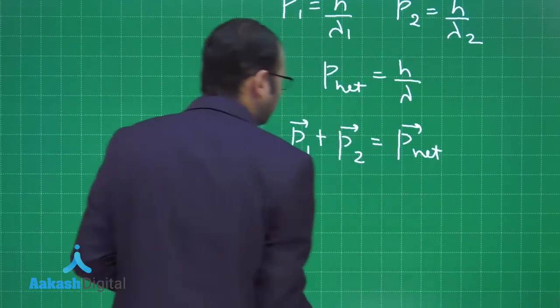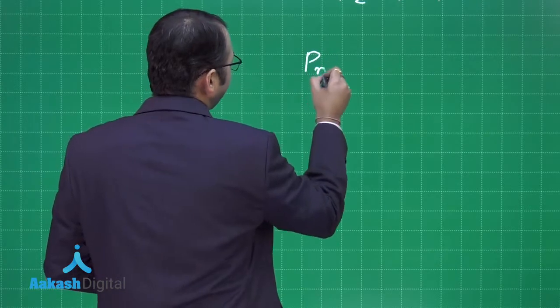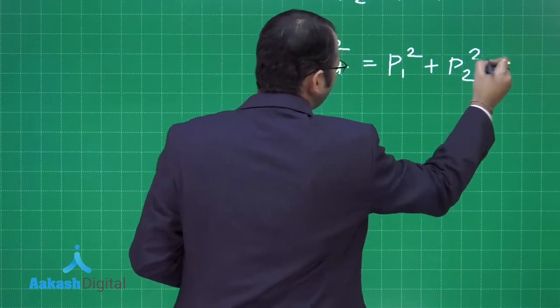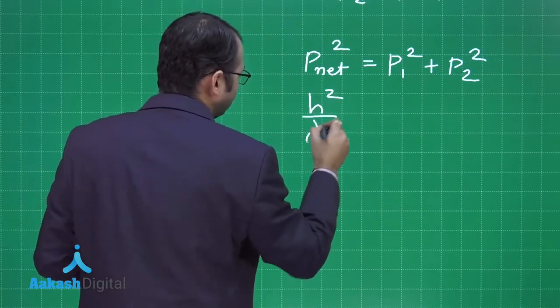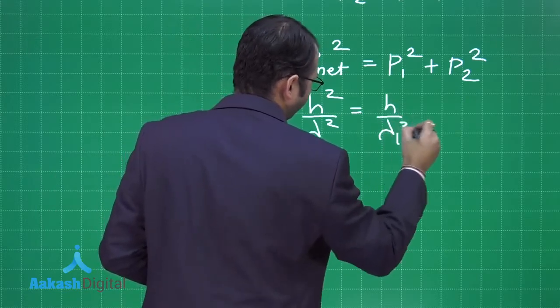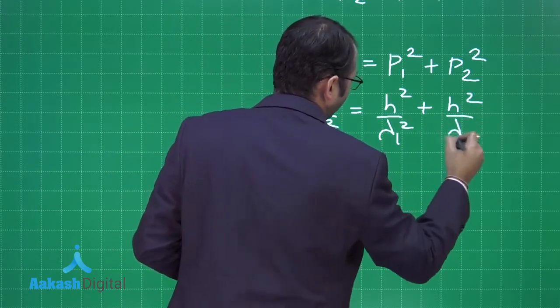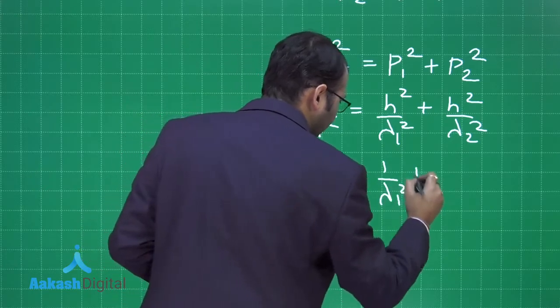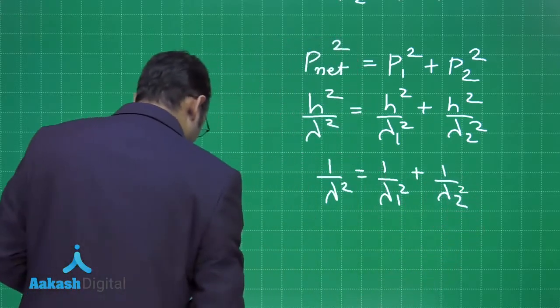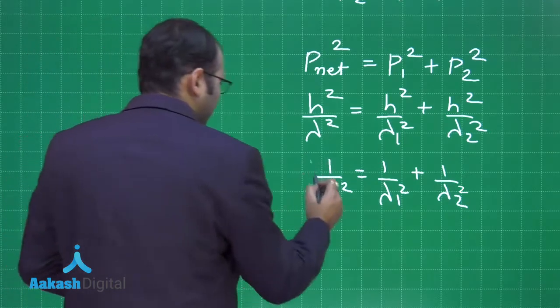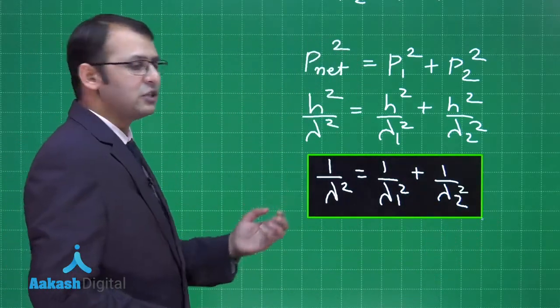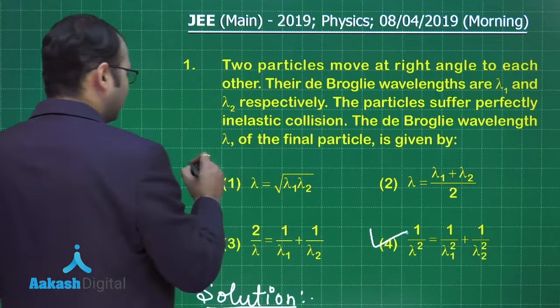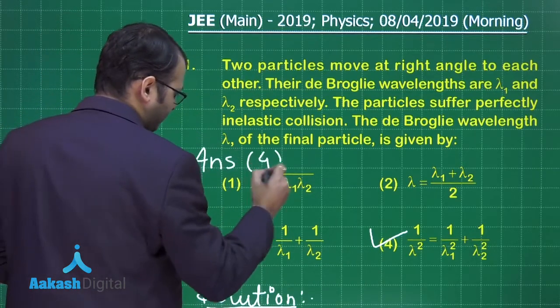Starting from here, for the vectorial sum, by magnitude I will write P net squared equals P1 squared plus P2 squared. Putting the values, I will get this relation. On cancelling H, I get 1 upon lambda square equals 1 upon lambda 1 square plus 1 upon lambda 2 square. This is the final answer. Among the four given options, option number 4 is the right answer.